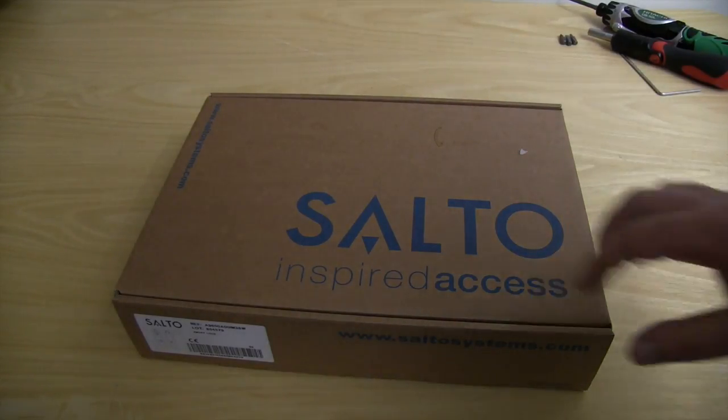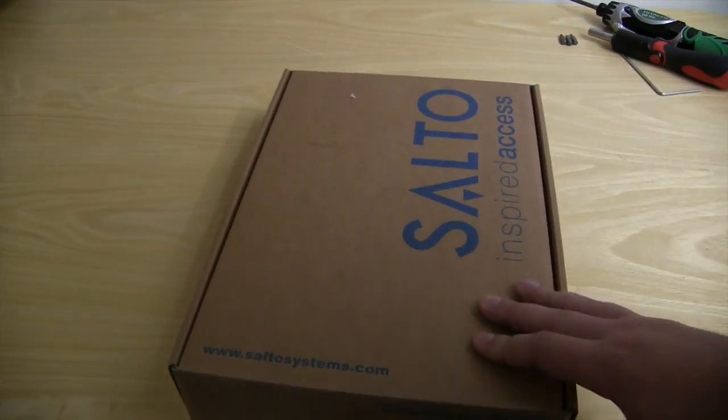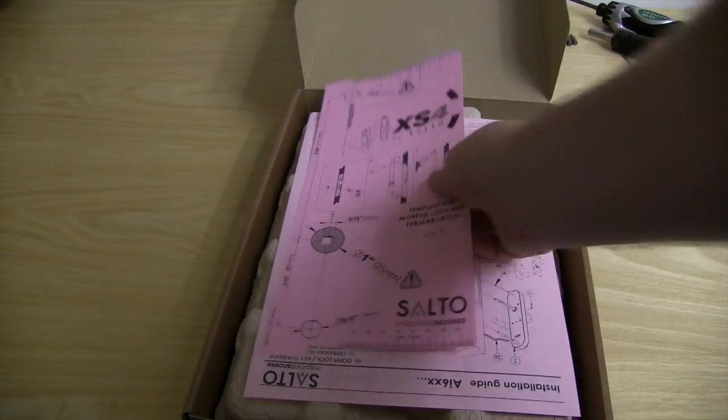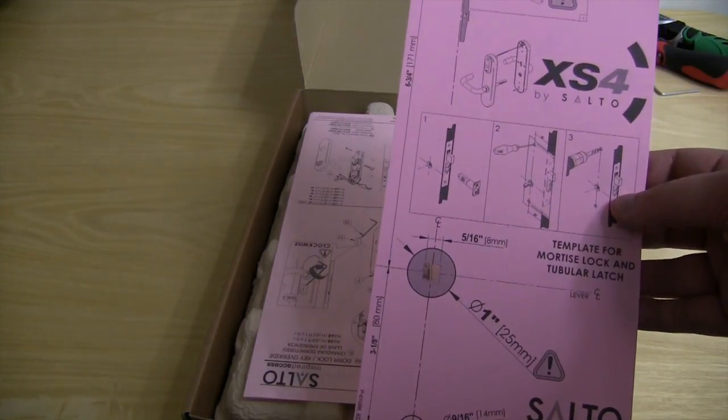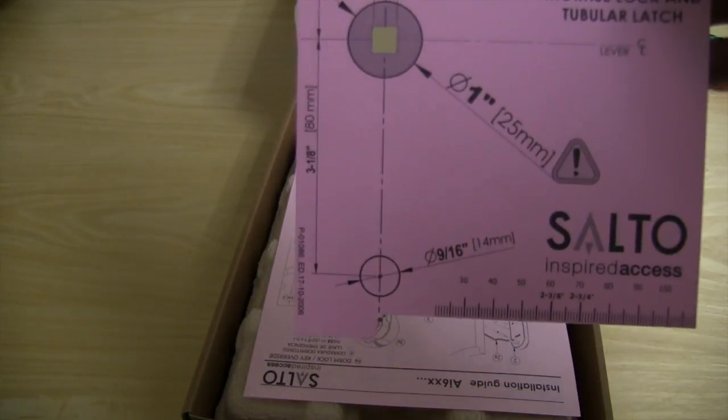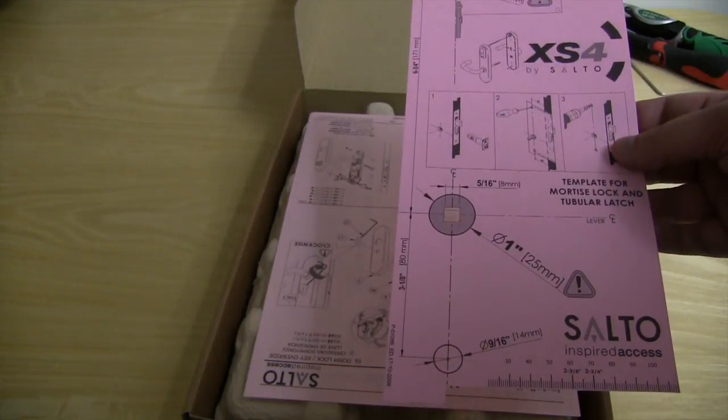Let's take a look inside the box. First thing you'll see is a template on how to drill the door. If your doors haven't been drilled already, you can use this to make the two holes that are necessary for this lock.